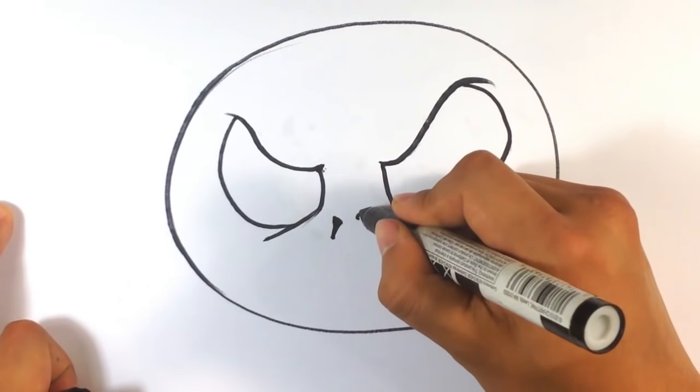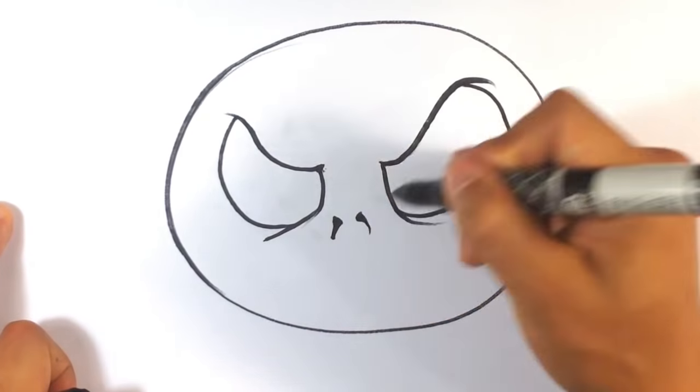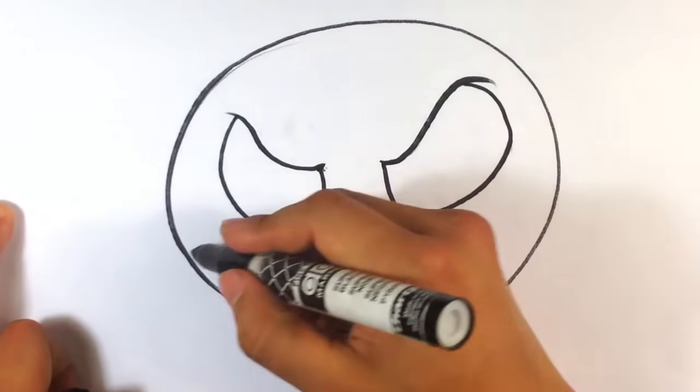And then his nose is basically really tiny, almost like apostrophes or commas, you know what I mean? It's kind of big on one side. And you could even do it the other way around, I've seen it the other way around.